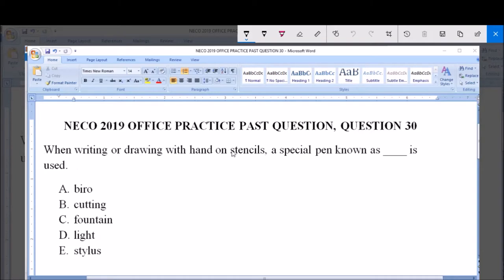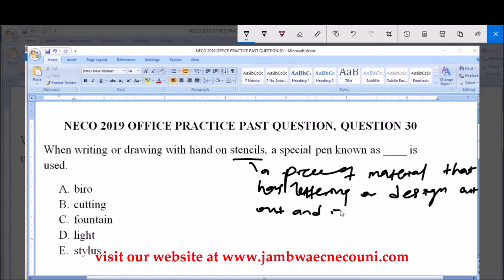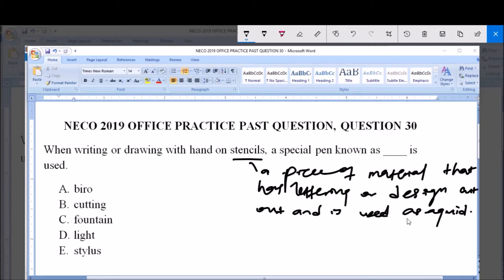Now before we answer this question, what is a stencil? A stencil is a piece of material that has lettering or design cut out, and it's used as a guide in making your design or lettering. So that's what stencil is.